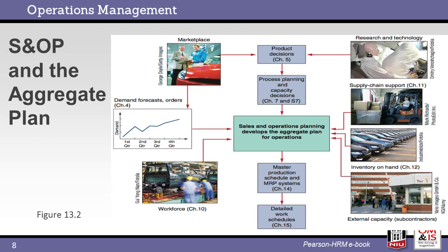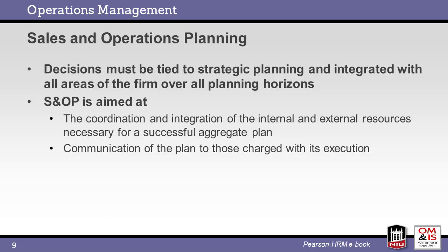This diagram shows the various elements leading up to the aggregate plan. Note the various chapters from the text associated with these actions. As stated earlier, planning must be an expression of the high-level strategy for the entire organization. Sales and operations planning includes the creation of the plan, along with coordination of the plan with the various members of the supply chain.